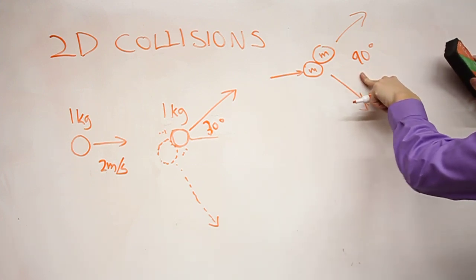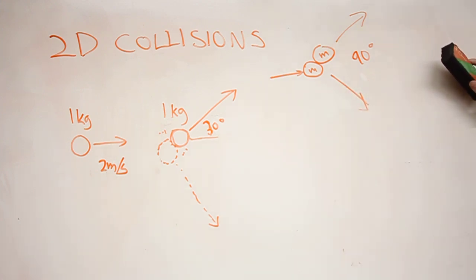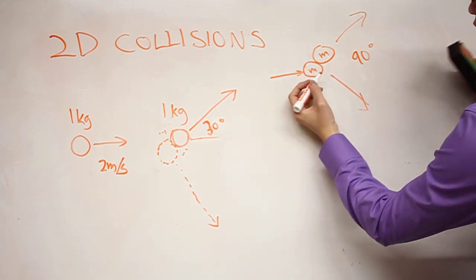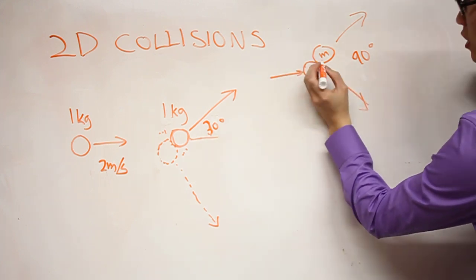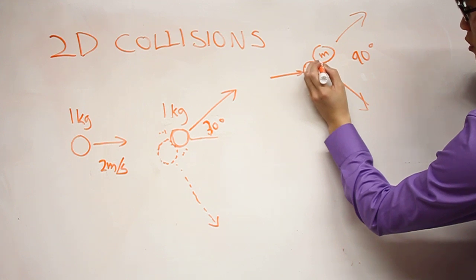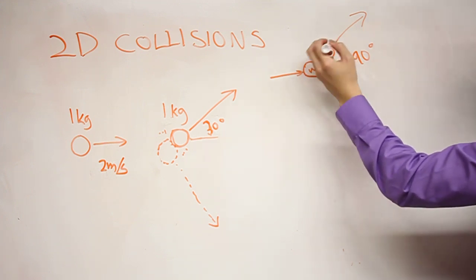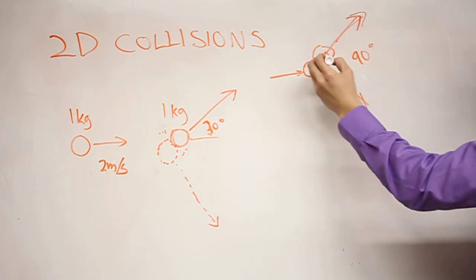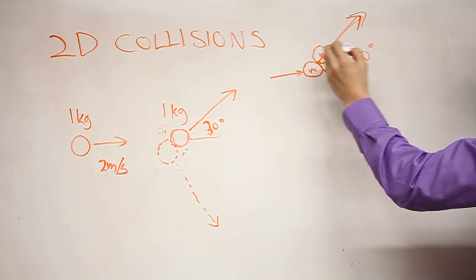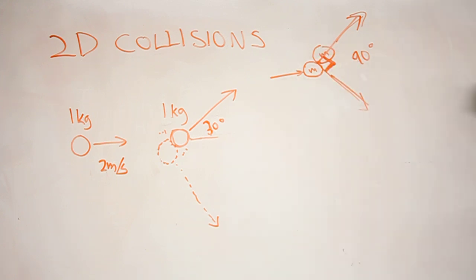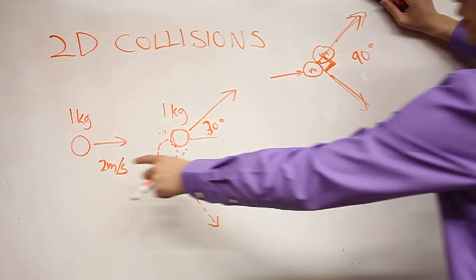This actually becomes a very important strategy in billiards. You always eye the ball you want to hit, you look for this point of this ball, and you know that it's going to move in this direction, so you're intuitively seeing that perpendicular angle. A lot of billiard players know this.